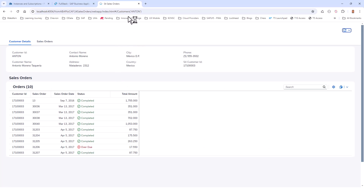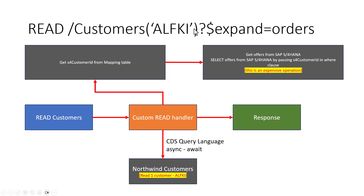The V2 request will have the primary key and then a dollar expand to get the customer orders. Here I'm reading the customer's local table as a pass-through with a custom read handler. I'm not reading all customers — I only want this one particular customer with this primary key. Once I read that customer, I populate the S4 customer ID from our mapping table. Now I have all the fields from Northwind customers and the S4 customer ID, so I just need to get the orders.